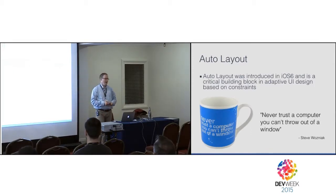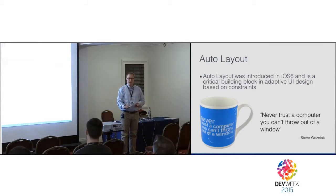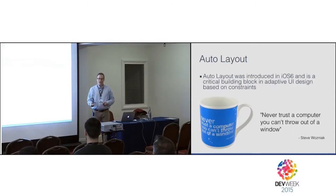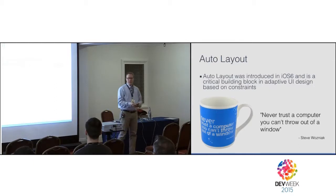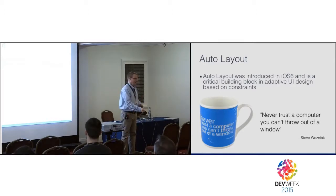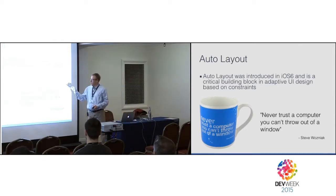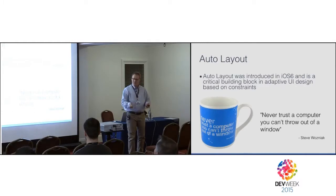In iOS 6, they introduced auto layout — it actually came from macOS. Auto layout is a much more flexible layout system designed around constraints. Constraints are simply linear equations. The idea is you can create formulas to decide exactly how things are going to lay out. The problem with auto layout is that with all that flexibility comes great complexity. I like to think of it as an API that only the people who created Objective-C could have designed — it is hideously hard to use.